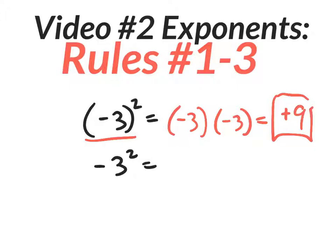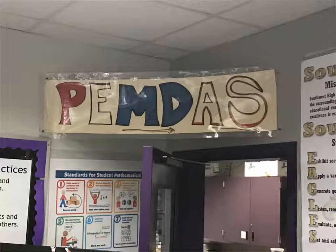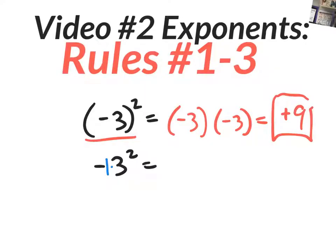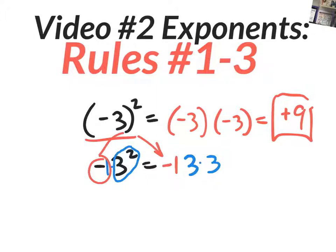On the bottom example — negative three squared without parentheses — the negative is kind of like saying negative one times. Remember PEMDAS: you do parentheses first, then exponents, then multiplication. So you do the exponent first — three squared is three times three — and then the negative one out front multiplies last. So the answer is negative nine. Big difference: if the minus sign is included inside parentheses, you write it on each term when you expand. If it's not included, you just put that minus sign in the front.